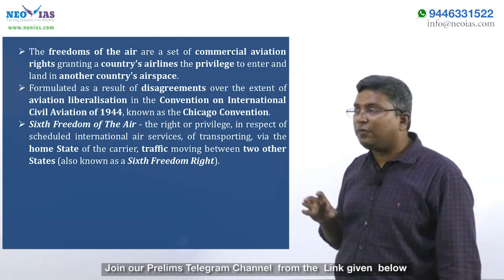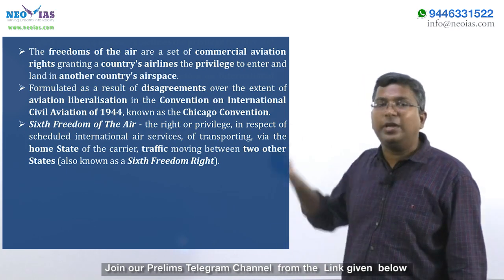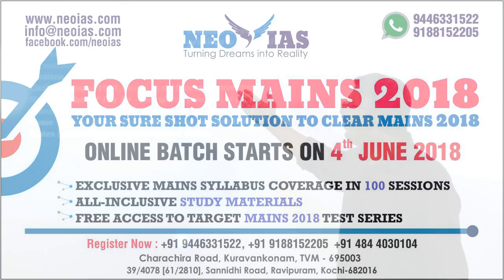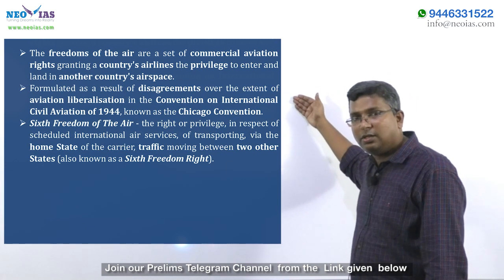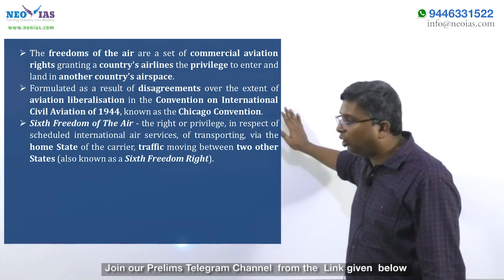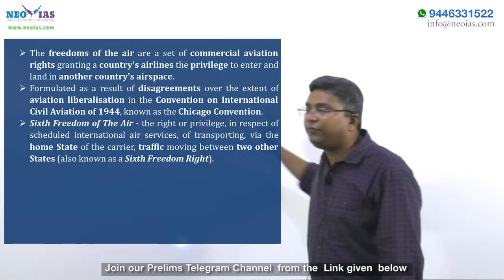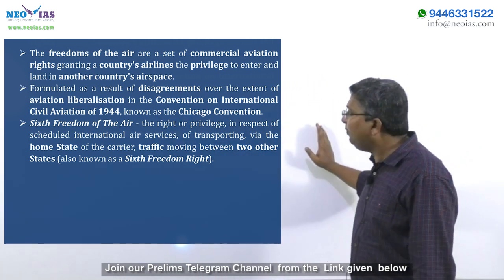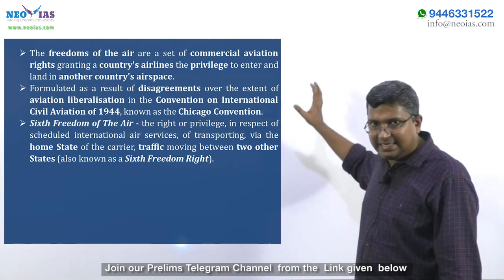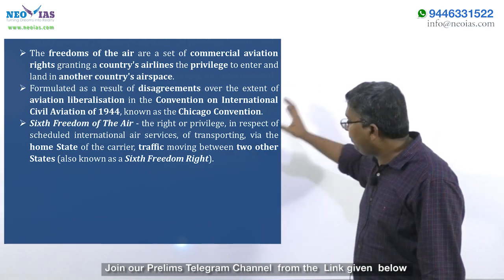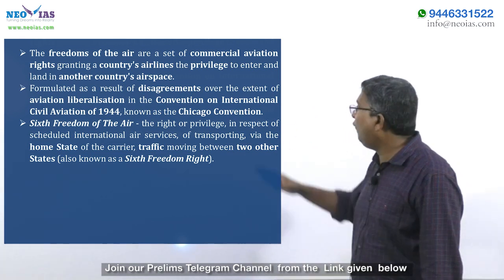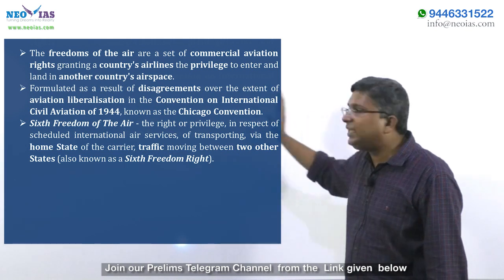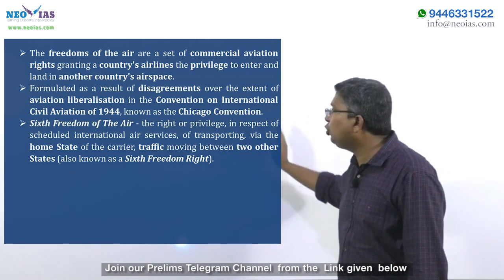These freedoms of the air were formulated as a result of disagreements over aviation liberalization at the Convention on International Aviation of 1944, which is known as the Chicago Convention. The sixth freedom of the air is the right or privilege in respect of a scheduled international air service of transporting, via the home state of the carrier, traffic moving between two other states.